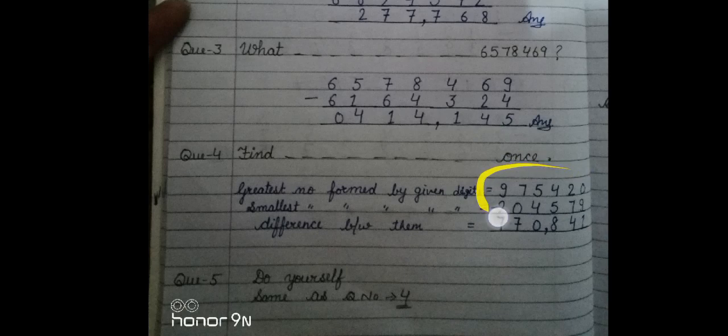And the smallest number is 2,44,579. So these two terms are to be formed and the difference is this. You will have to minus these two terms, you will get your answer, simple. Question number four, you will do this question by yourself.